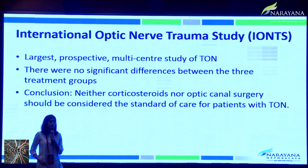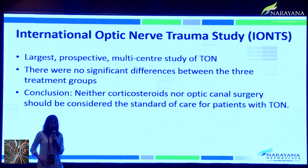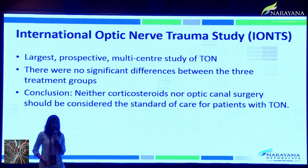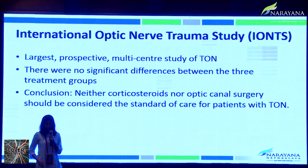Another multi-center study was the International Optic Nerve Trauma Study, wherein patients were divided into three groups: Group 1 managed conservatively, Group 2 treated with systemic steroids, and Group 3 treated with surgery. There was no statistically significant difference in visual outcome between the three groups, and the authors concluded that neither corticosteroids nor optic canal surgery should be considered the standard of care for traumatic optic neuropathy.